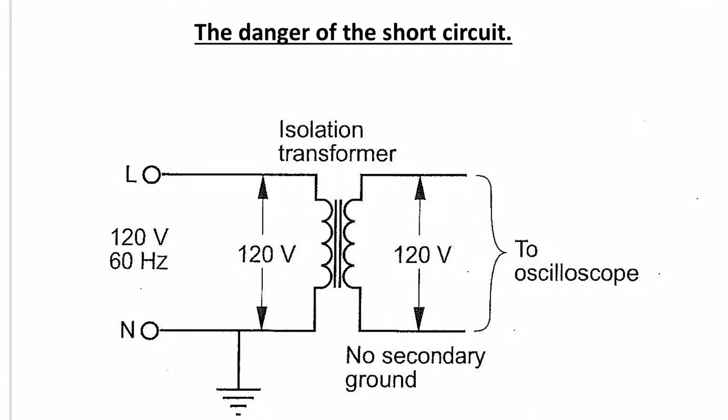Over here we have our isolation transformer. This is going off to the oscilloscope. The primary side is grounded. This secondary side has no ground to it so it is completely isolated. It's still protected from the primary side on this ground but this side we have no ground so we don't have to worry about that one circuit floating through and going down to ground and causing a short. That's how we get rid of it - this isolation transformer.